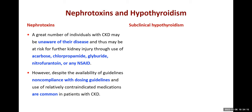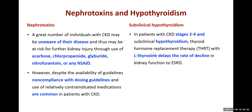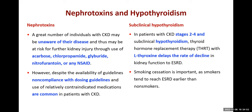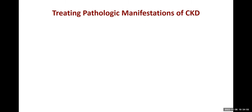Hypothyroidism is detrimental for CKD. In patients with stages 2 to 4 CKD, subclinical hypothyroidism — without signs and symptoms — can worsen progression. Thyroid hormone replacement therapy with L-thyroxine delays the rate of GFR decline. When a patient presents with CKD, it is worthwhile to check T3, T4, and TSH levels. Smoking cessation is also important.